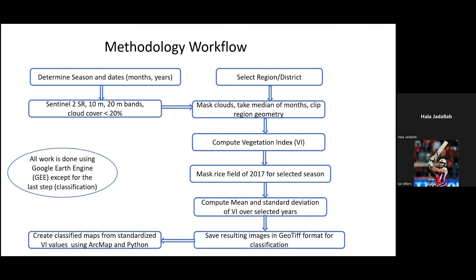We selected Sentinel-2 SR — the surface reflectance product of Sentinel-2 — which has a resolution of 10 meters for most bands and 20 meters for the red edge band, with a requirement that cloud cover is less than 20%. After that, we masked the clouds, took the median of the selected images, and clipped the region of interest.